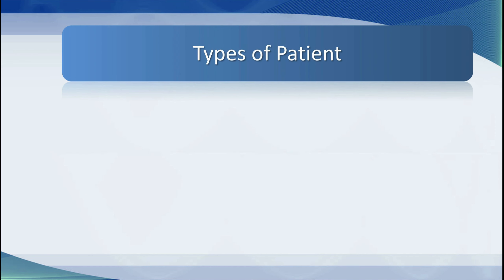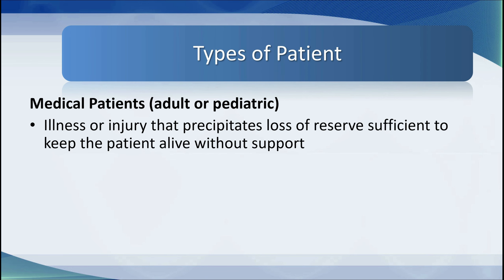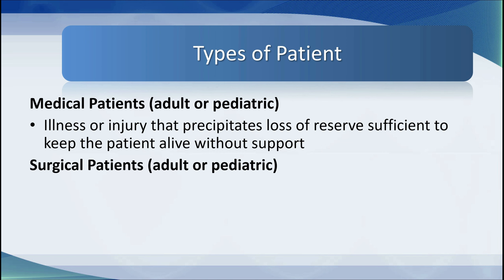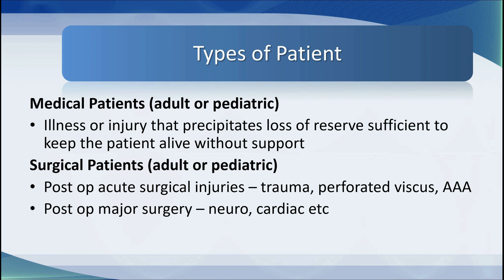Different types of patients go to the ICU. They can be defined simply as medical patients — adults or children — who have illnesses or injuries that precipitate loss of physiologic reserve sufficient to keep the patient alive without support. In other words, the patient gets so sick that unless they receive life-sustaining therapies they will die. They can also be surgical patients, adults or children, who are post-op from acute surgical injuries such as trauma, perforated viscus, abdominal aortic aneurysm, brain injury, or major surgeries such as neurosurgery or cardiac surgery.